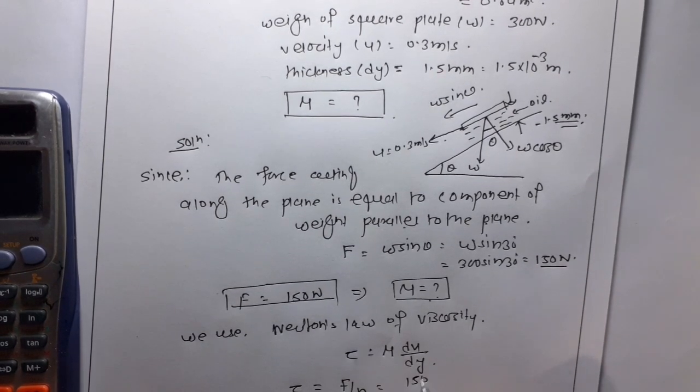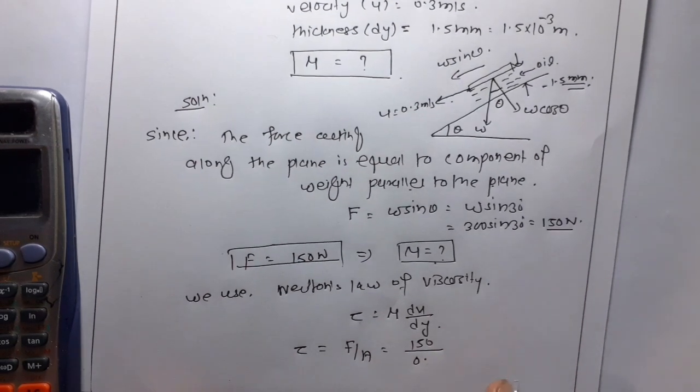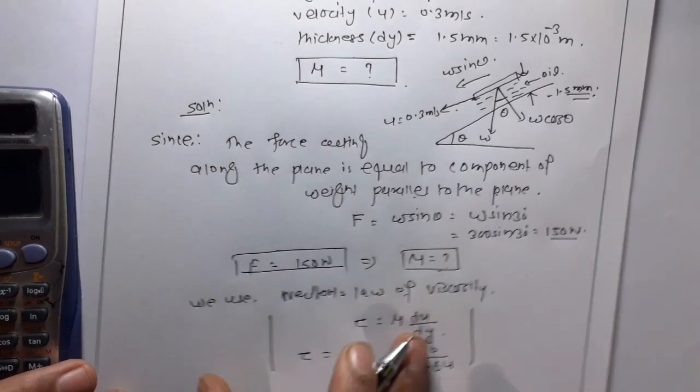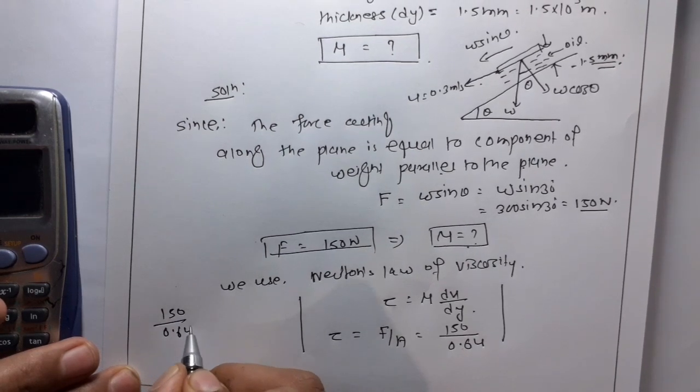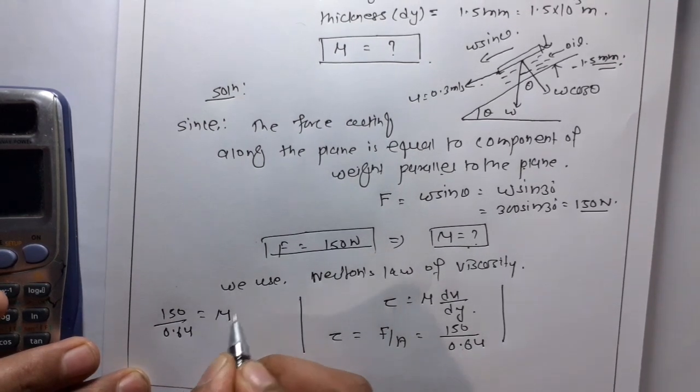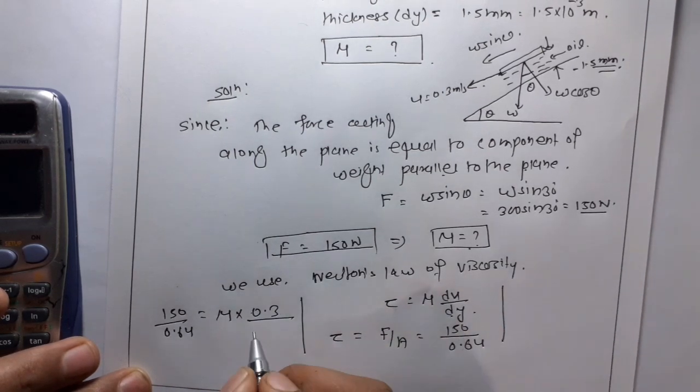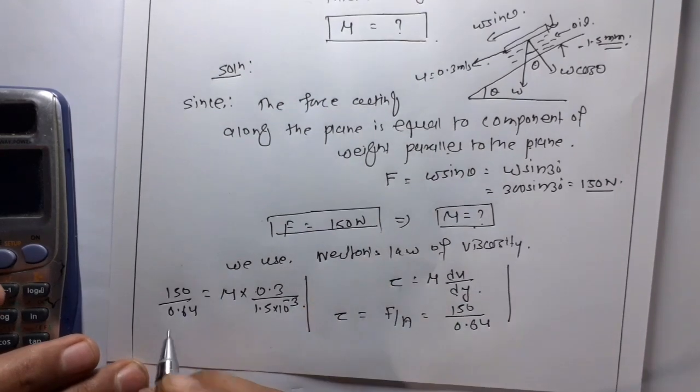So F is 150 and area is 0.64. So, 150 upon 0.64 is equal to mu into du is 0.3 upon dy is 1.5 into 10 to the power minus 3.